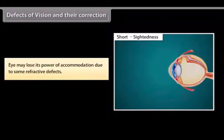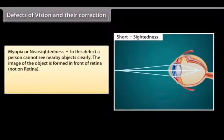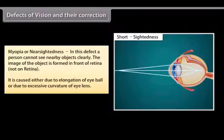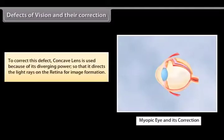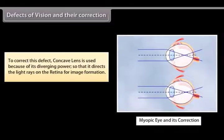Defects of vision and their correction: The eye may lose its power of accommodation due to some refractive defects. Myopia, or nearsightedness, is a defect in which a person cannot see distant objects clearly. The image of the object is formed in front of the retina. It is caused either due to elongation of the eyeball or due to excessive curvature of the eye lens. To correct this defect, a concave lens is used because its diverging power directs the light rays on the retina for image formation.